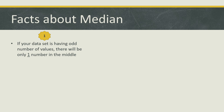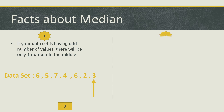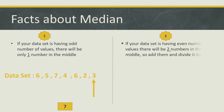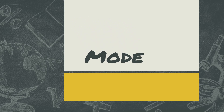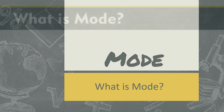Facts about median: if your data set has an odd number of values, there will be only one number in the middle — if the count is 1, 3, 5, 7, 9, or 11, your data set has an odd number of values. But if your data set has an even number of values, there will be two numbers in the middle, so you add them and divide by 2. Whenever you see a data set and want to find the median, look at the number of values: even means take average of two middle numbers, odd means one number will be left in the middle.